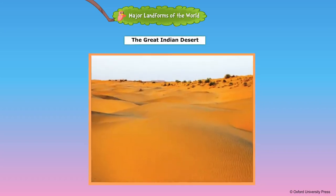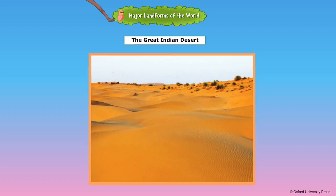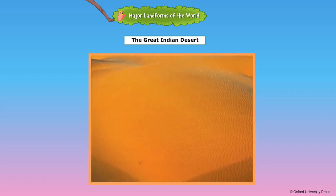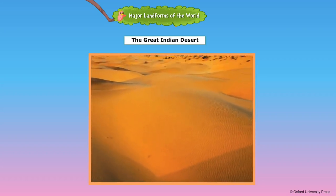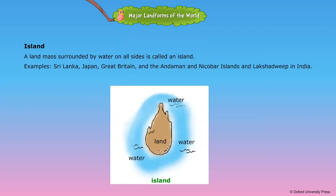The Great Indian Desert or the Thar Desert lies in the state of Rajasthan. The plants normally found here are cactus, kikar, and babool. People here are normally nomads. Island. A landmass surrounded by water on all sides is called an island. Examples include Sri Lanka, Japan, Great Britain, and the Andaman and Nicobar Islands and Lakshadweep in India.